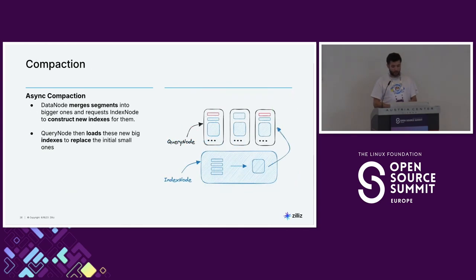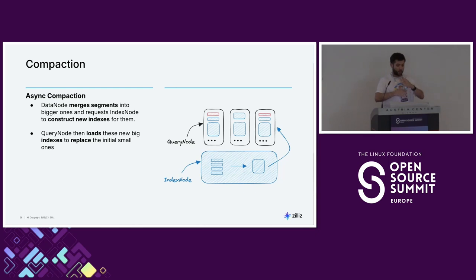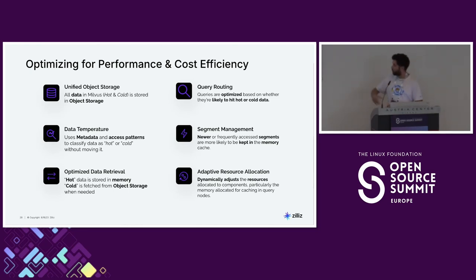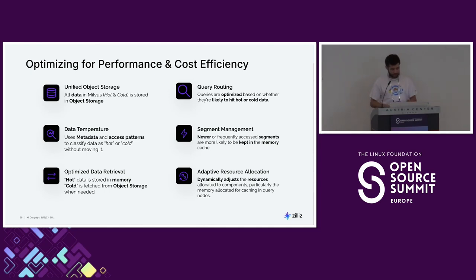Then we have compaction, which merges segments — because you might add or remove data, so you need to rebuild new segments. Once you build a new segment, you build a new index and replace the old one. Everything runs in object storage. We also use metadata and access patterns to classify data as either hot or cold — hot data stays in memory and cold data stays in object storage.